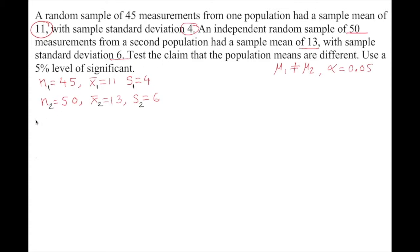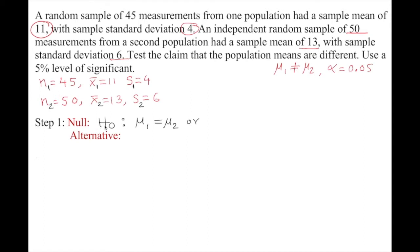Step 1 is null hypothesis and alternative hypothesis. For the null hypothesis, we assume the two population means are the same. H₀: μ₁ = μ₂, or equivalently, μ₁ − μ₂ = 0. That is the null hypothesis — we believe and assume they are equal.